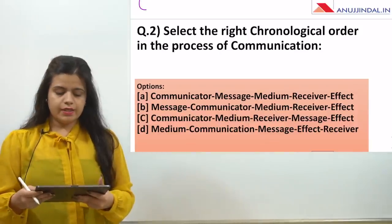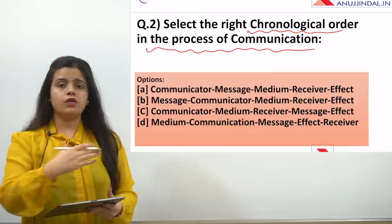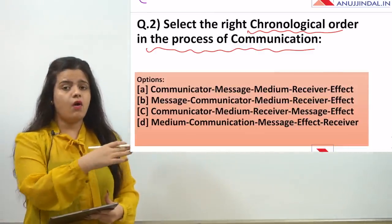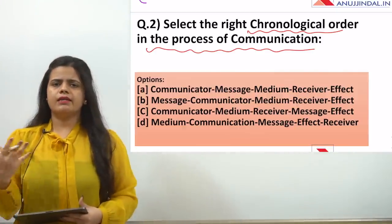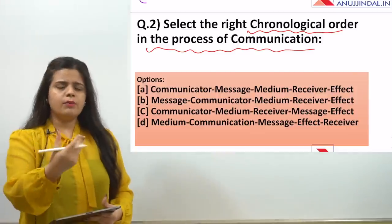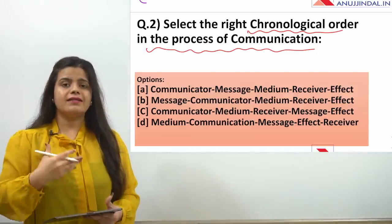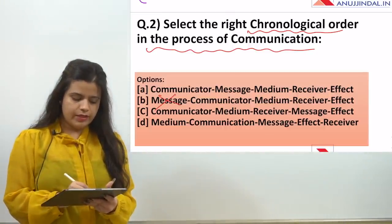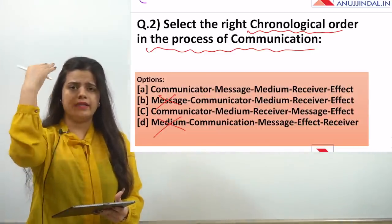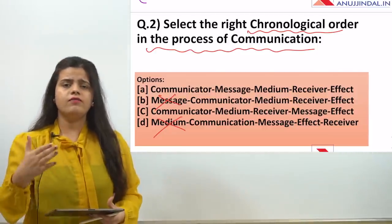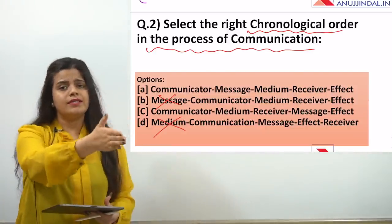The second question: select the right chronological order in the process of communication. This is a very important question. Before we communicate, when we try to talk to someone, there must be a communicator — we are the sender. Without a communicator, where will the message come from? Without a sender, there cannot be a message.